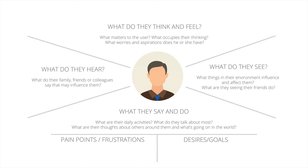Looking at the empathy map: what do they think and feel — what matters to the user, what occupies their thinking, what worries and aspirations do they have? What do they see — what things in their environment influence and affect them, what do they see their friends do? What do they say and do — what are their daily activities, what do they talk about most, what are their thoughts about others around them? What do they hear — what do their family, friends, and colleagues say that might influence them? Once you have all this info, you can craft your marketing messages in a way that speaks to them directly.